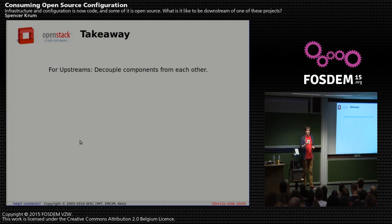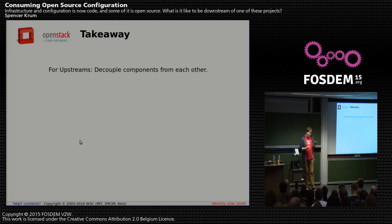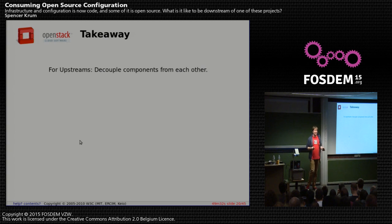For upstreams: keep track of what you're coupling and where your assumptions are. Don't imply co-location — if two services are co-located, talk over localhost socket rather than direct file system access, so a downstream can split them. Don't assume user ID and group membership. Document your firewall rules and network proximity layout, which will help your downstream figure out what to do.